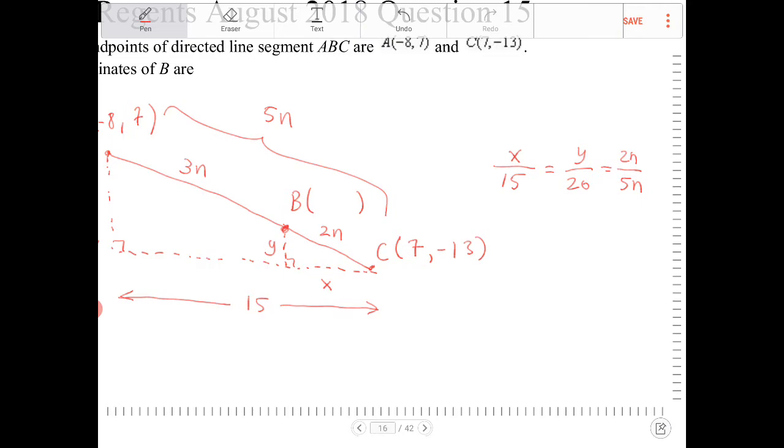And both of these are supposed to equal 2n to 5n. So looking at this, even though I have three proportions set up, I can solve one proportion at a time. I can say x over 15 is equal to 2n over 5n.